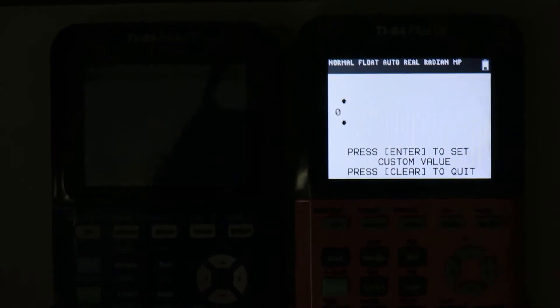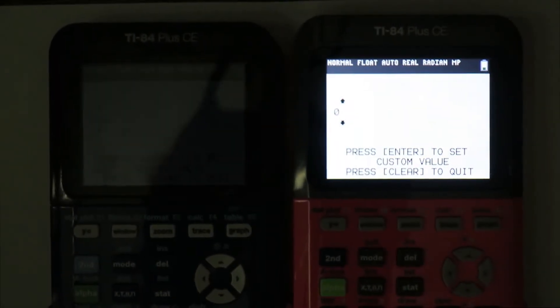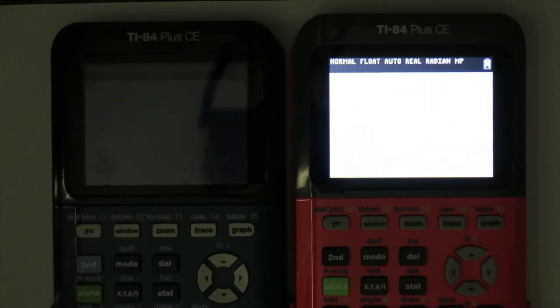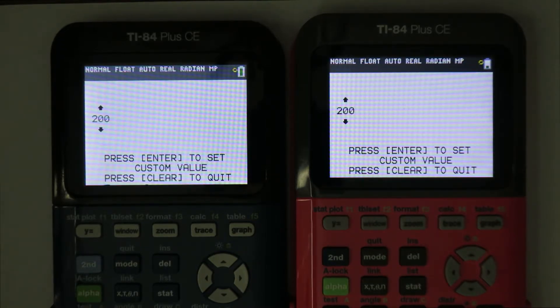To quickly set a custom brightness, press enter then type in any number from 0 to 255 inclusive. Press enter again to set the brightness at that level.